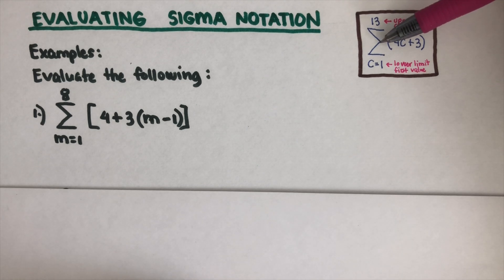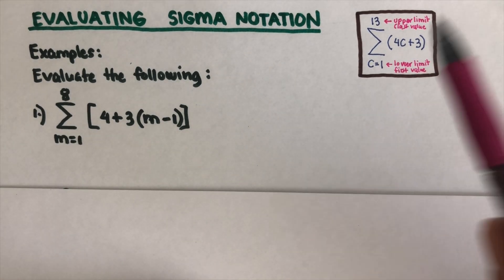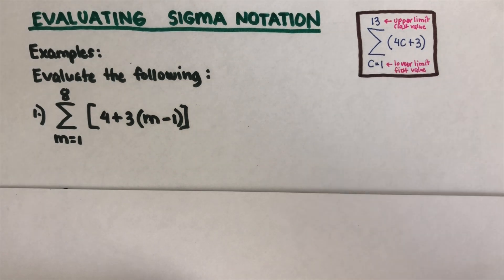Instead of writing 1 plus 2 plus 3 plus 4, it's going to be a long list. That's the purpose of having this Sigma notation - to shorten that work. Let's take an example to better understand what I'm talking about.